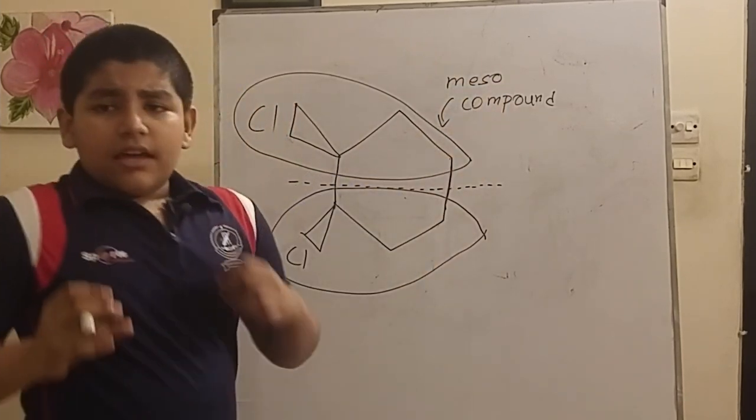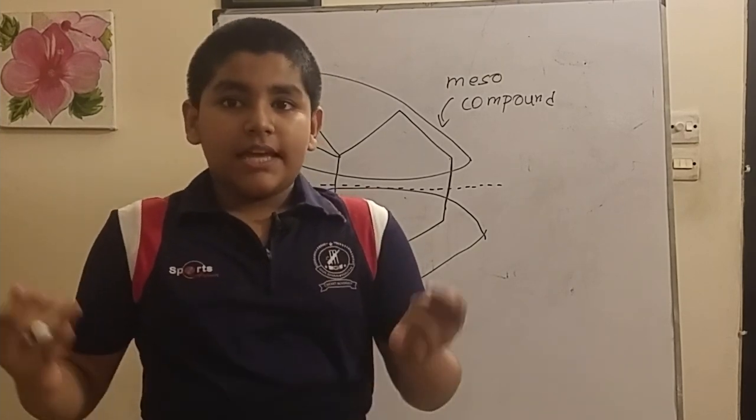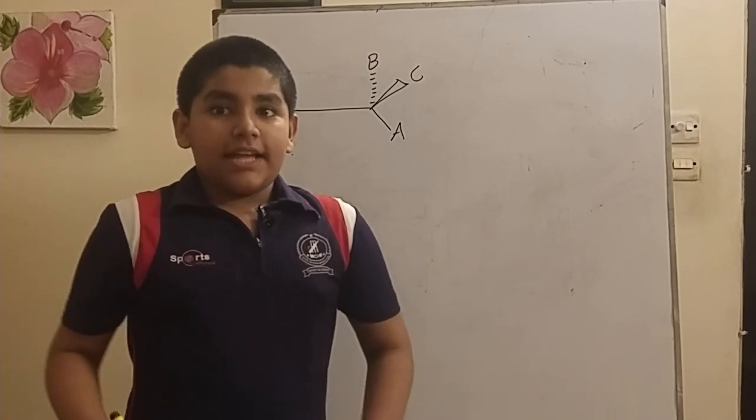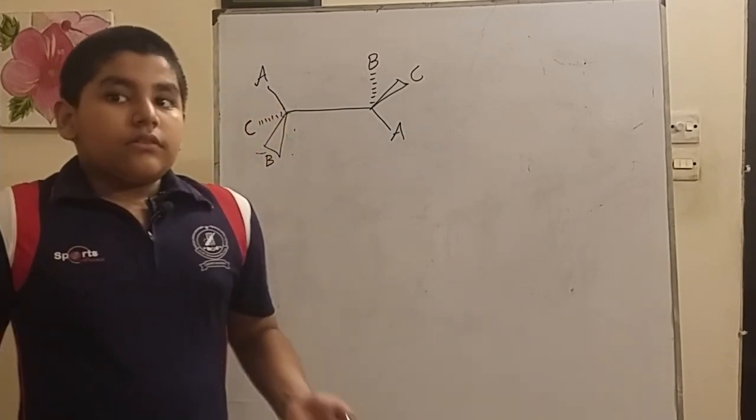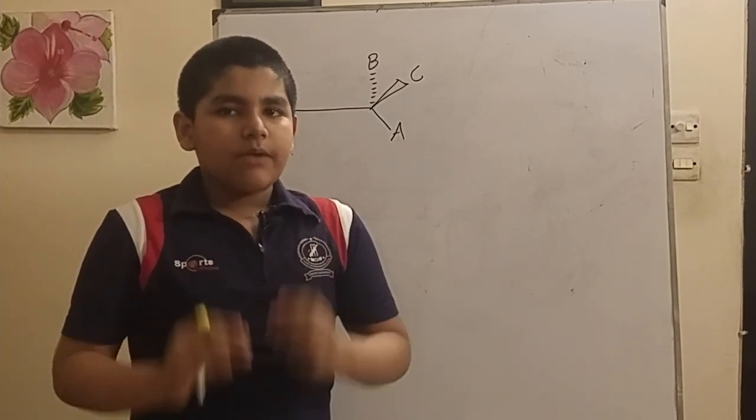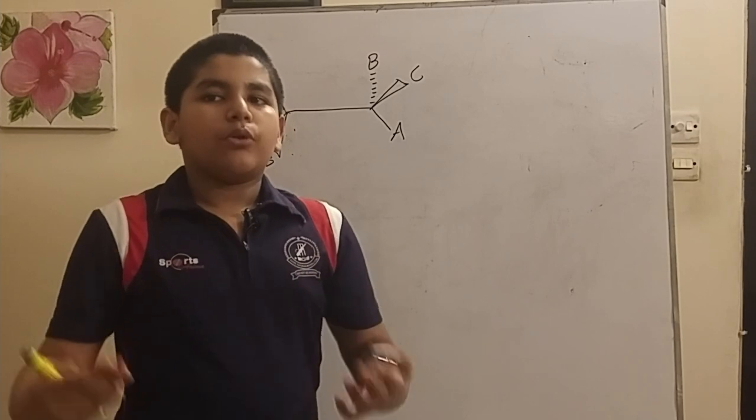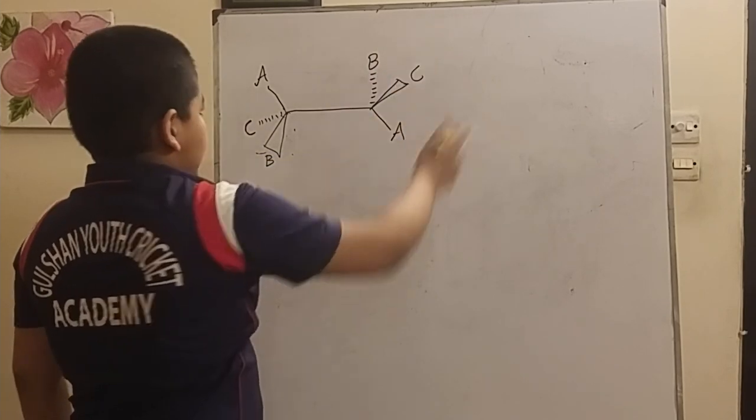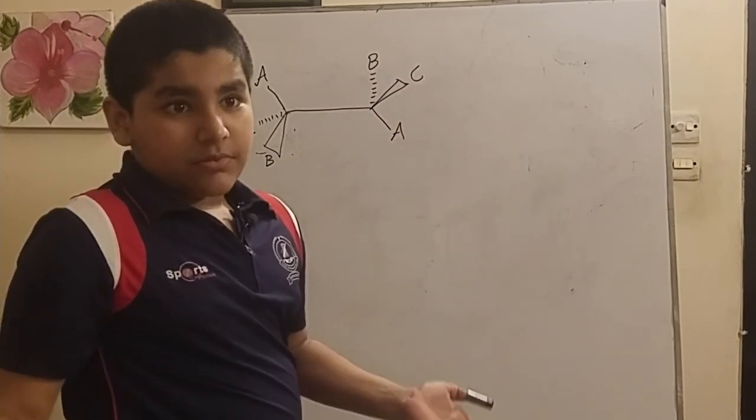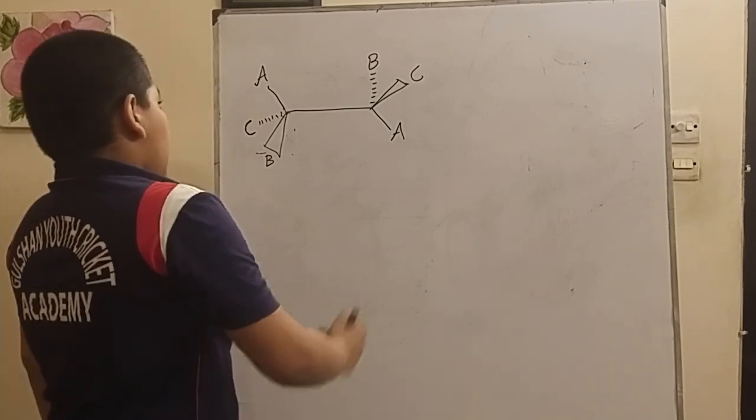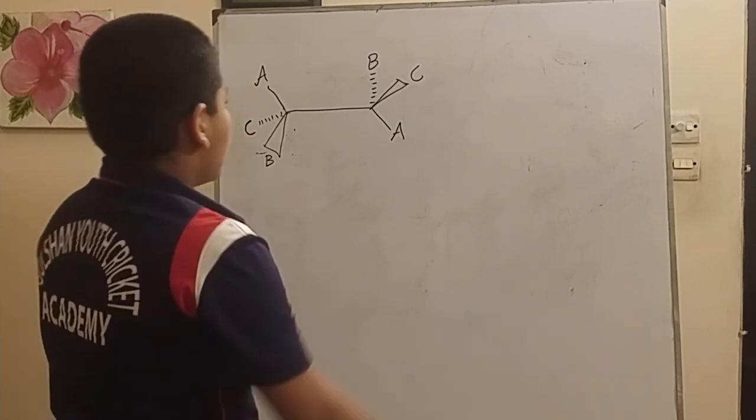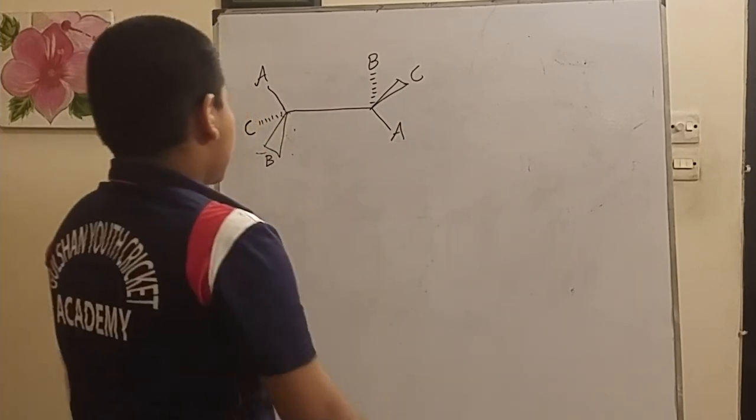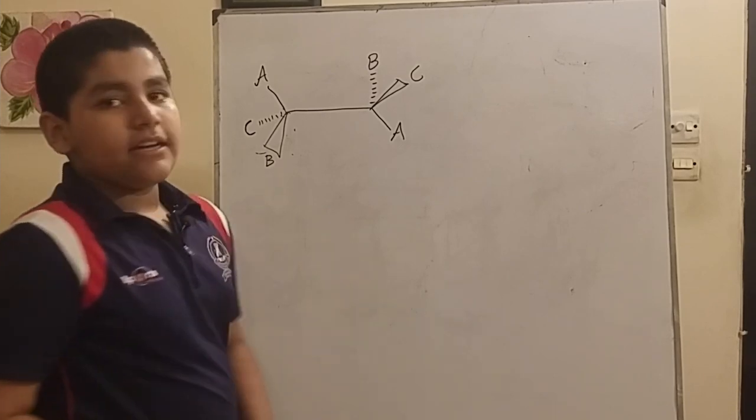Any meso compound can be achiral. Now there is another type of molecule that can have multiple chiral centers but be achiral overall. The A, B, and C can be any atom, it doesn't matter.